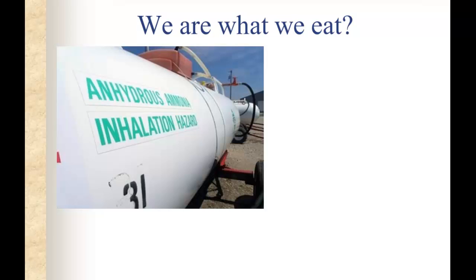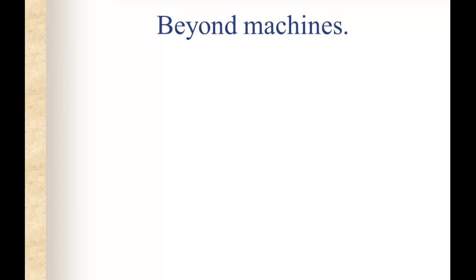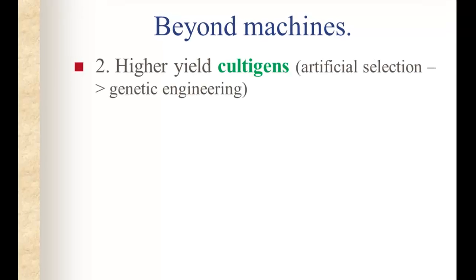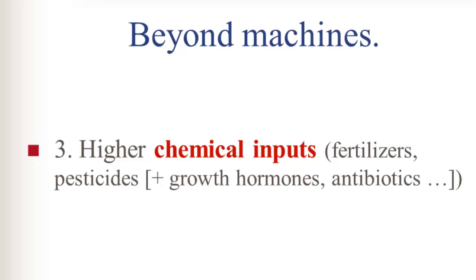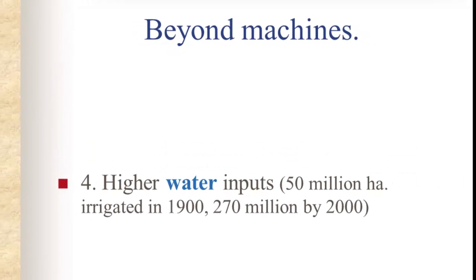Beyond the machines, there are higher-yield cultogens, involving a transformation from artificial selection — which has been going on a long time — to genetic engineering, which is quite novel. There are also higher chemical inputs including fertilizers, pesticides, growth hormones, and antibiotics. Higher water inputs as well: in 1900 about 50 million hectares were irrigated; that had expanded five-fold by the year 2000.